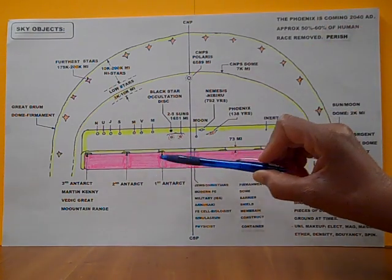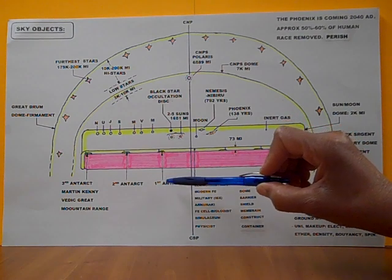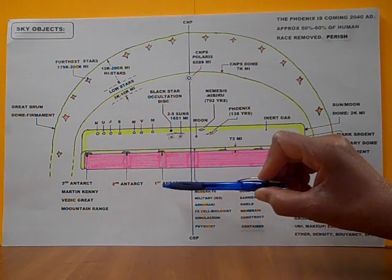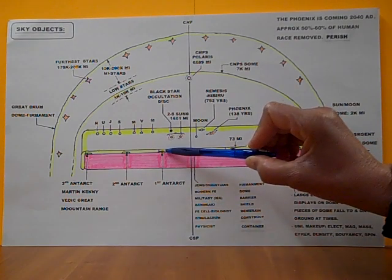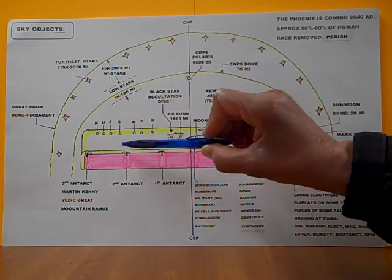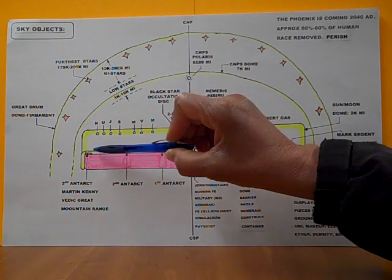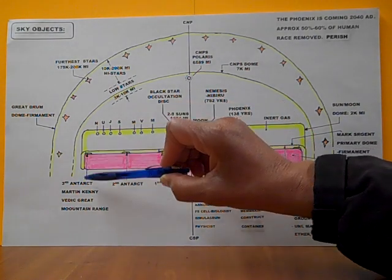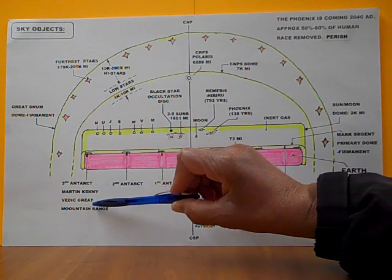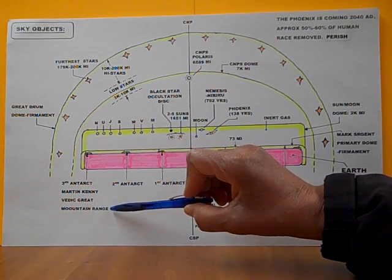And we have approximately, as far as I can tell, there are three Antarctic rings with a probable fourth. But here's the first Antarctic ring, Antarctic belt, the second Antarctic belt, the third Antarctic belt. And with the third Antarctic belt, you will find the Martin Kenney Vedic Great Mountain Range.